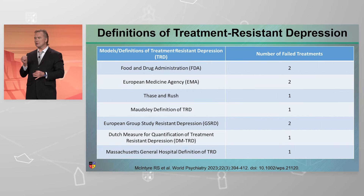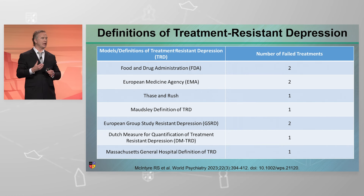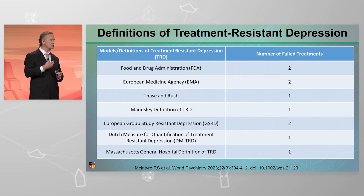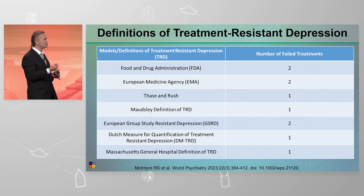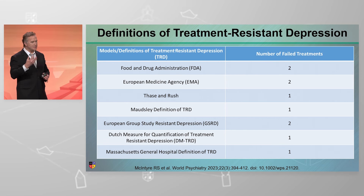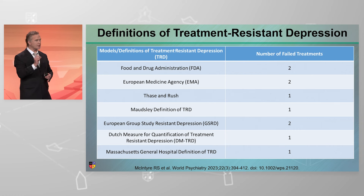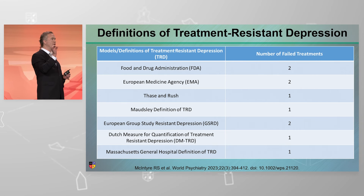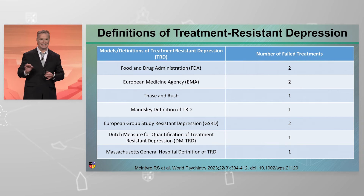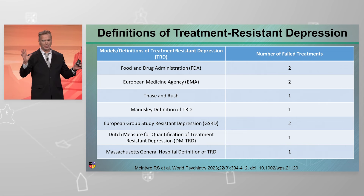I want to first step back two steps. Words matter, and when we're in the lunchroom with a colleague discussing a patient or a case vignette looking for some collegial advice and we use this phrase 'treatment resistant depression,' what do we mean? This moniker first appeared in our literature way back in 1974 — 50 years ago to the year.